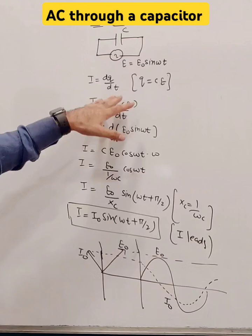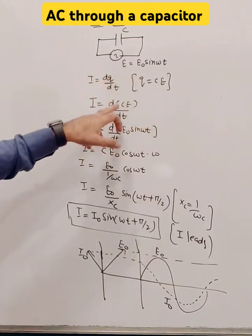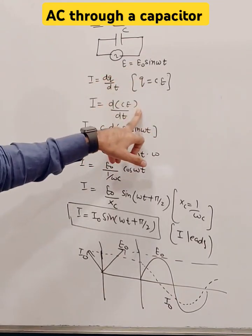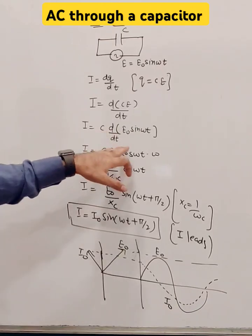So I equals dQ by dt. Put the value of Q equals C into E, and E equals E naught sine of omega t. Differentiate it with respect to time.